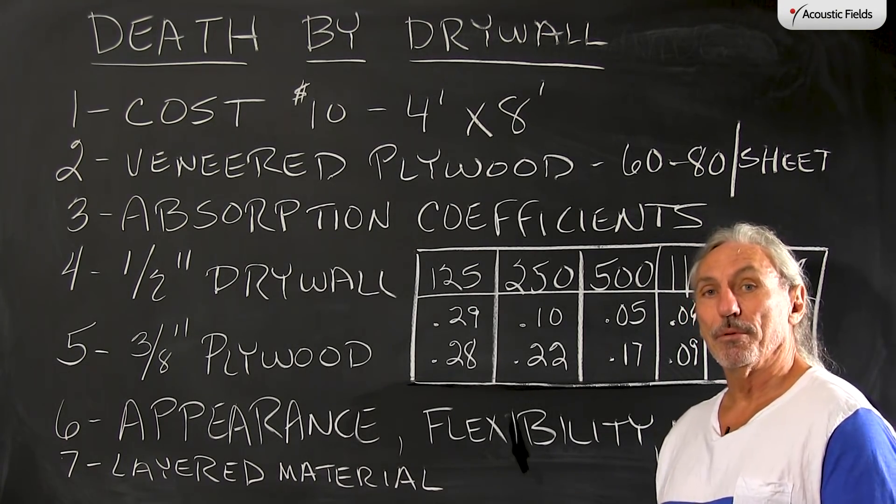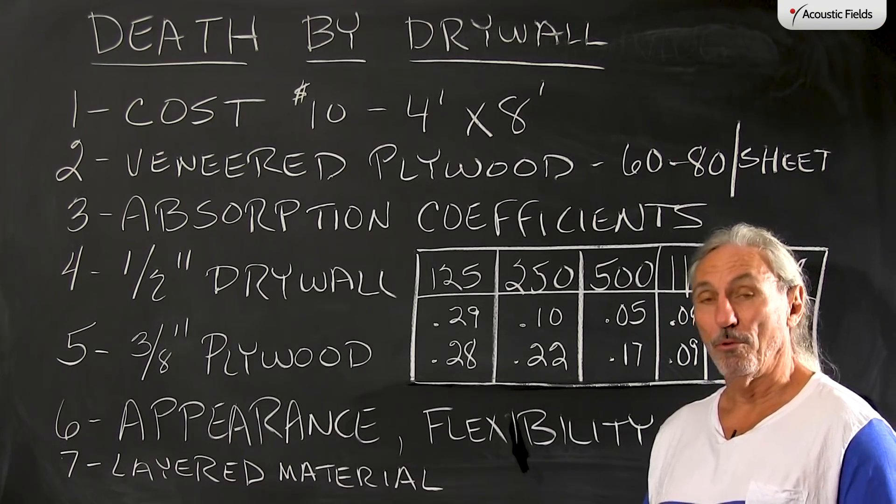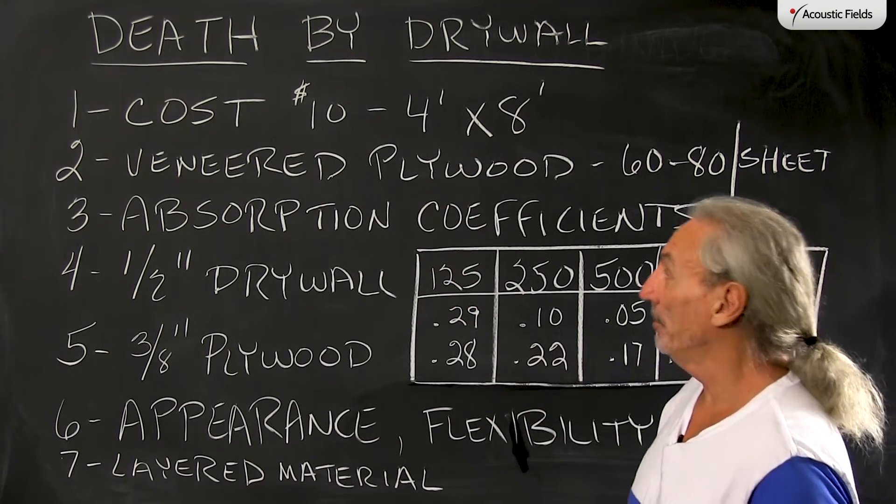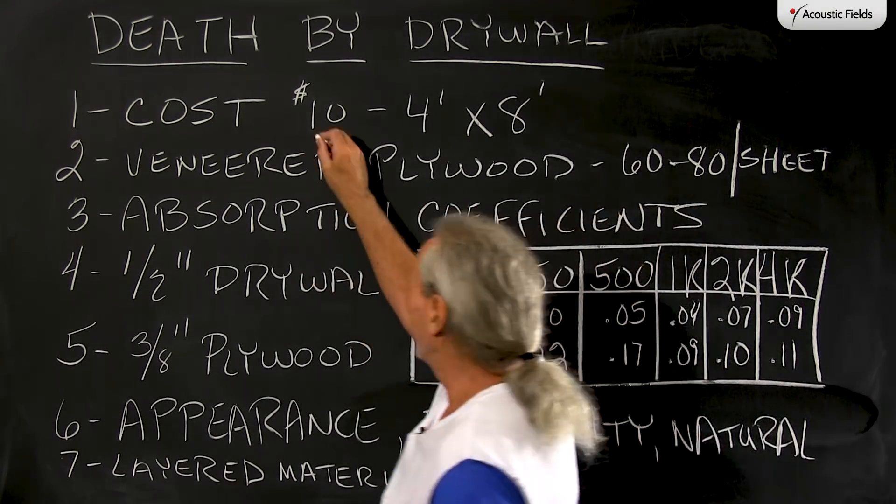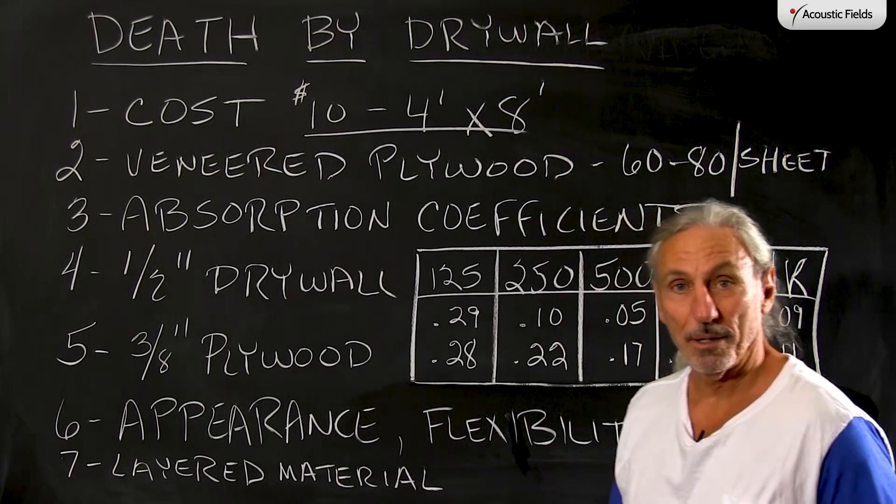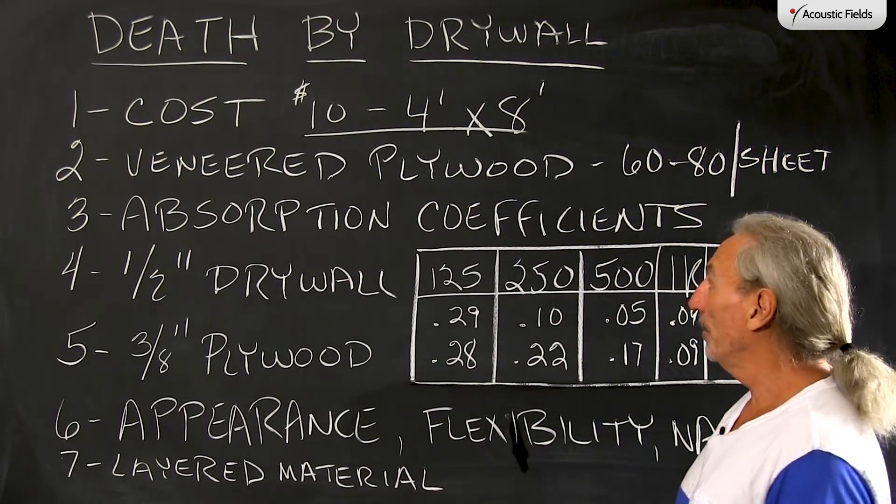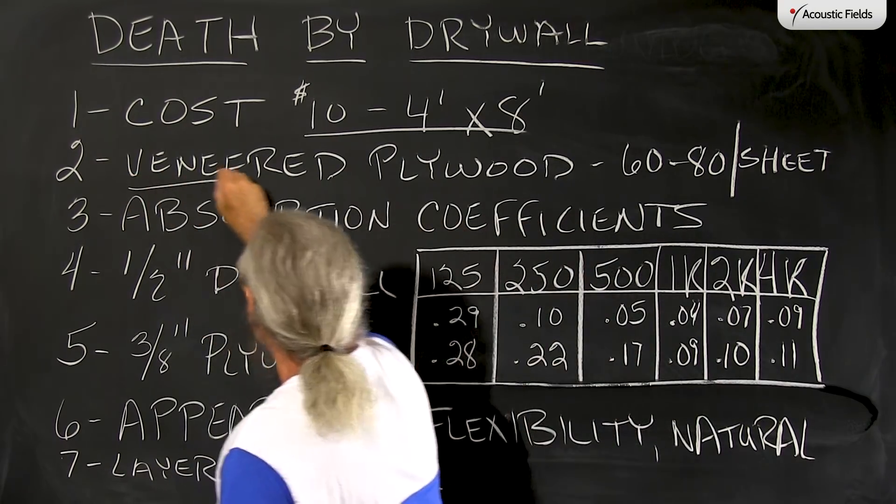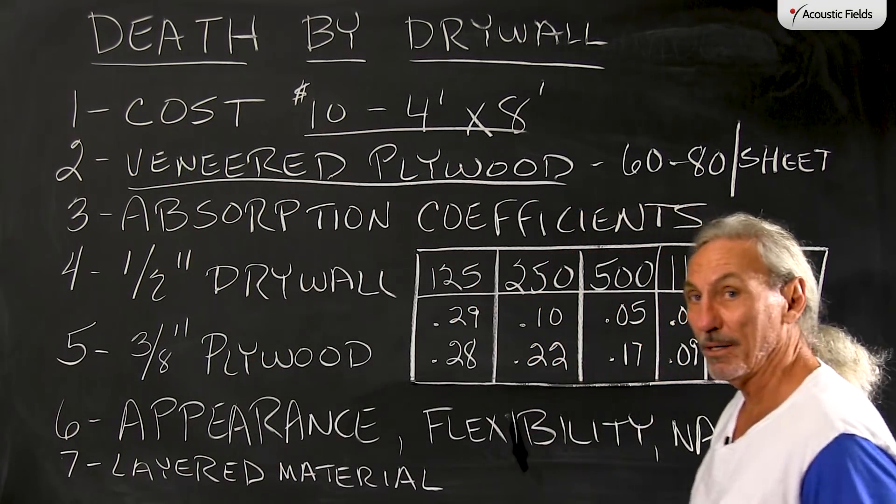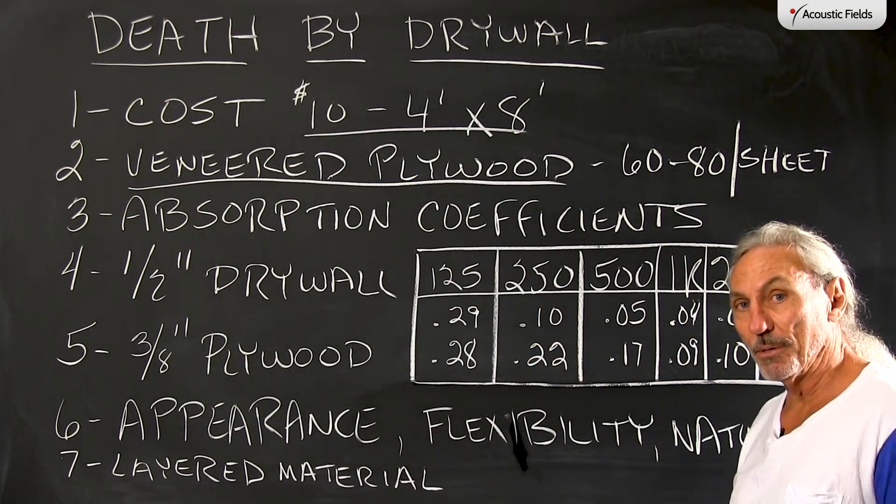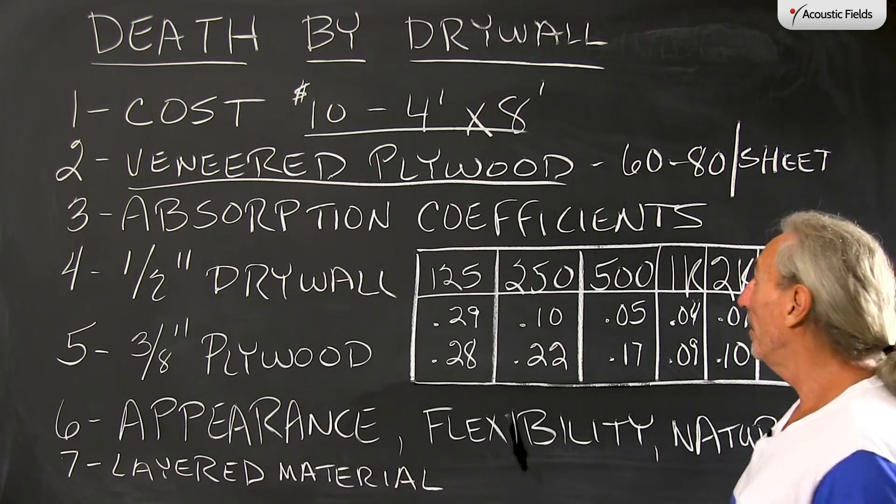One of the arguments for drywall, if you will, is cost, obviously. A 4x8 sheet costs about 10 bucks in most environments. We don't use it. We use strictly veneered plywood and we're going to tell you why and dispute some of the reasons that people use drywall.